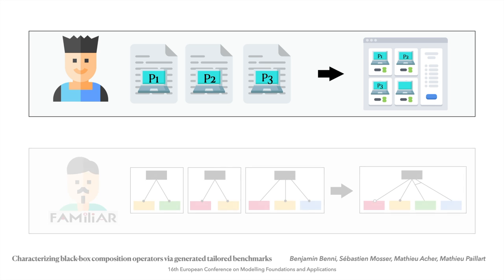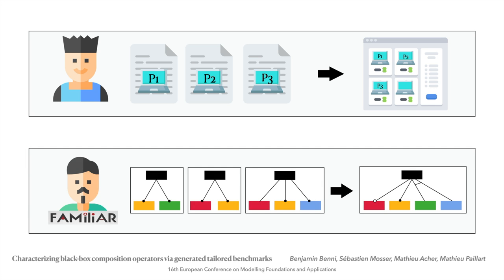How convenient — Matthew has been developing for years a tool suite named Familiar. One of the goals of Familiar is to manage variability using feature models, and you can actually map Ben's problem of building a catalog to a problem of composing feature models.